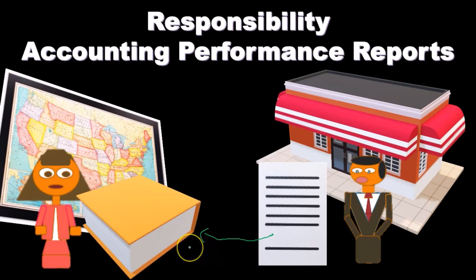Here we can see that there's going to be more controllable costs and more detail, but it's going to be less detailed than the information at the store level. The store level is going to have a lot of detail about the costs they have control over, and then summarize those and give them to the regional office.